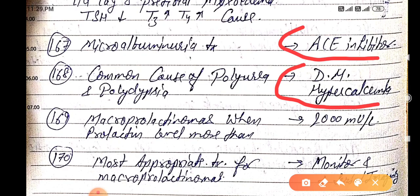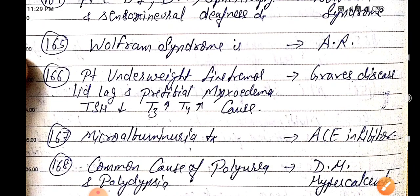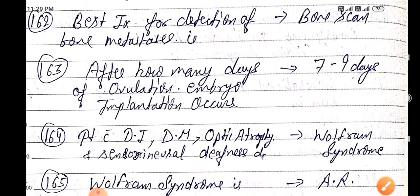Common cause of polyuria and polydipsia is diabetes mellitus and hypercalcemia. Macroprolactinomas — when prolactin level is more than 2000. Most appropriate treatment for macroprolactinomas is monitor and serial imaging.